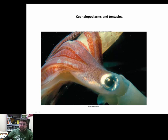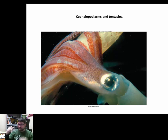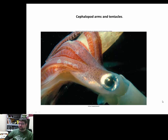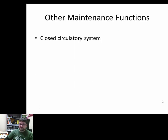I want to draw attention to the cephalopod eye, which is very unique. Remember that gastropods have eyes on the end of a tentacle stalk — poor eyes with a lens but no real depth of field. Bivalves don't have eyes at all. Cephalopods are very different: they have excellent eyesight, probably even better than human eyesight, which we'll come back to.